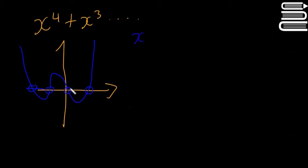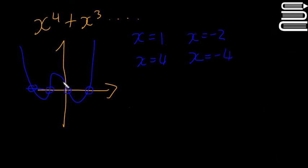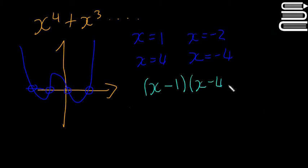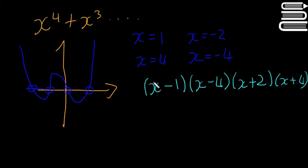So the roots are x = 1, x = 4, x = -2, and x = -4 — I'm just picking these numbers to sketch the idea. It hits the x-axis at four points, has four roots, and that means it also has four factors: (x - 1), (x - 4), (x + 2), and (x + 4). That's because it's x to the power of four. The degree of the polynomial means the highest power, and that determines the number of roots and factors.